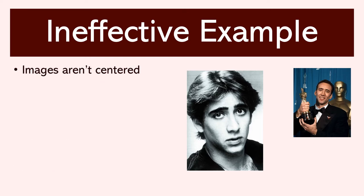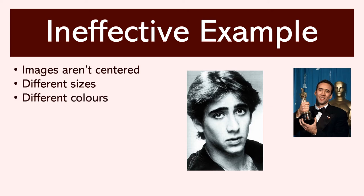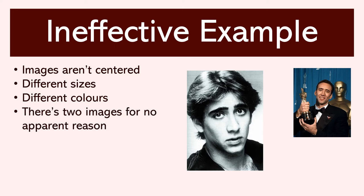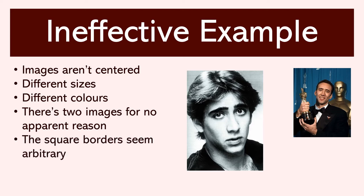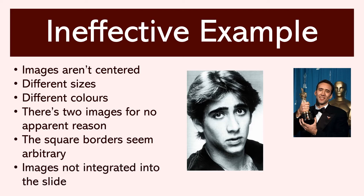First, the images aren't centered — there's lots of empty space. In addition, there are different sizes: a larger picture and a smaller picture, which seem unbalanced. They also have different colors; one's in black and white and one's in vibrant full color. Moreover, there are two images for no apparent reason — they're both images of Nick Cage, so why do we need two? The square borders of the images also seem arbitrary; there are lots of different options like round borders or transparent. You want to make a conscious decision and make sure they fit into your slide. And that brings us to our last point: the images simply haven't been integrated into the slide, but rather slapped haphazardly onto it.